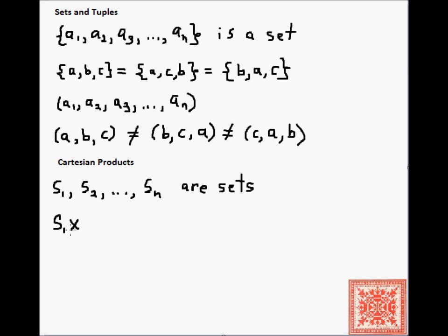Suppose that we have n sets: s1, s2, all the way to sn. The Cartesian product of these n sets is written as s1 times s2 times all the way to sn, and is a set of n-tuples.